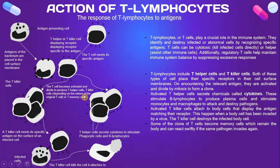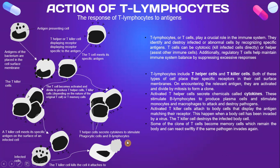Activated T helper cells secrete chemicals called cytokines. These stimulate B-lymphocytes to produce plasma cells and stimulate monocytes and macrophages to attack and destroy pathogens. Activated T killer cells attach to body cells that display the antigen matching their receptor — this happens when the body cell has been invaded by a virus — and the T killer cells destroy the infected body cells. Some clones of T cells become memory cells which remain in the body until the same pathogen is encountered again.